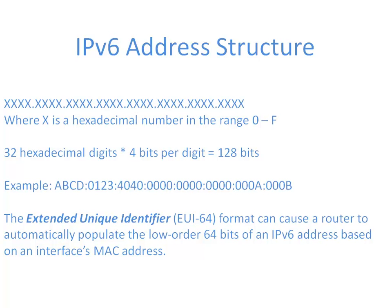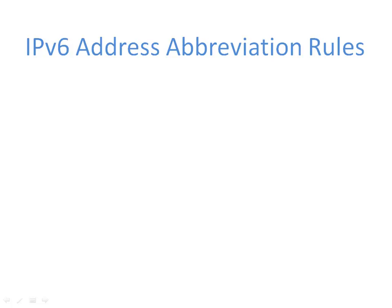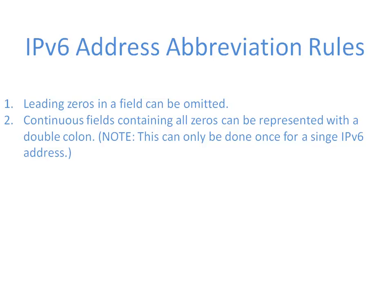There are rules for abbreviation that can squeeze an IPv6 address down into something more manageable. First, looking at these 8 fields separated by colons: any leading zeros in a field can be omitted. Second, if we have contiguous fields that contain all zeros, we can represent those contiguous fields with a double colon. You can only do this one time when abbreviating an IPv6 address — otherwise you wouldn't know the number of contiguous all-zero fields each double colon represents. If done just once, the device knows there are 128 bits total and can deduce how many zeros the double colon represents.